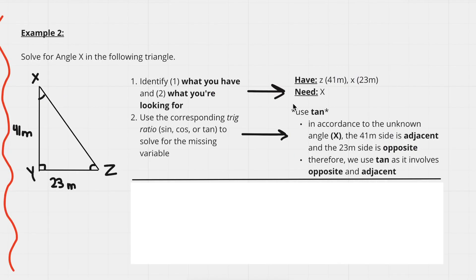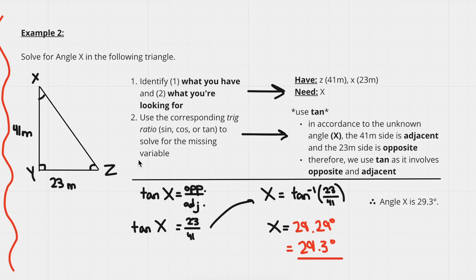Going back to SOHCAHTOA, the trig ratio that involves both opposite and adjacent is tangent. So we'll use tan. The 23-meter side is opposite and the 41-meter side is adjacent to angle x. Setting up the equation: tan(x) = opposite / adjacent = 23 / 41.